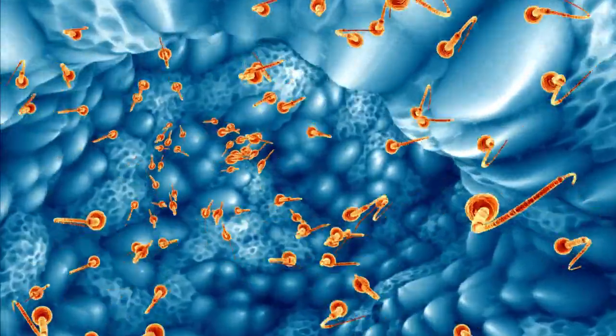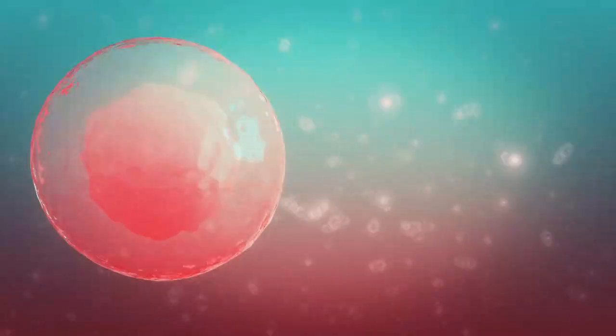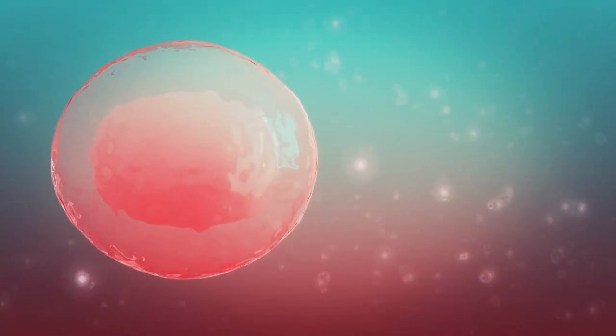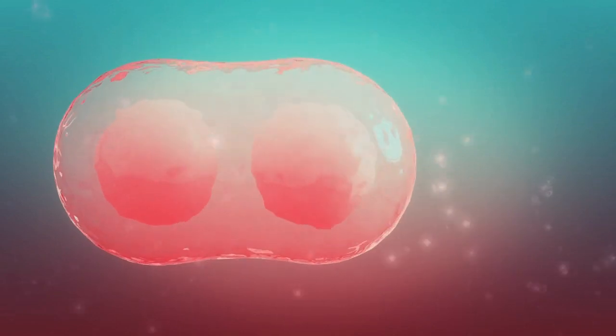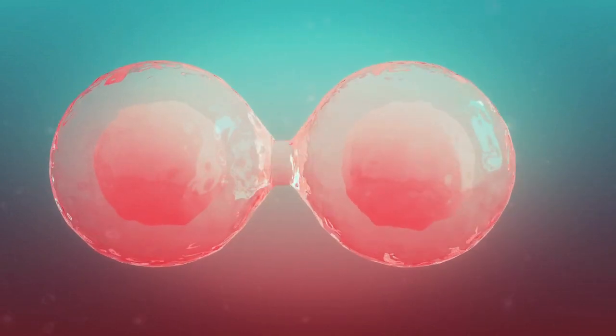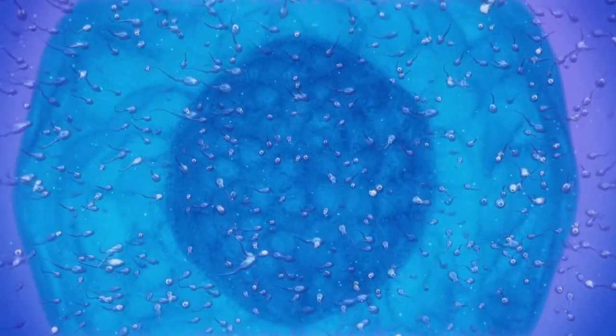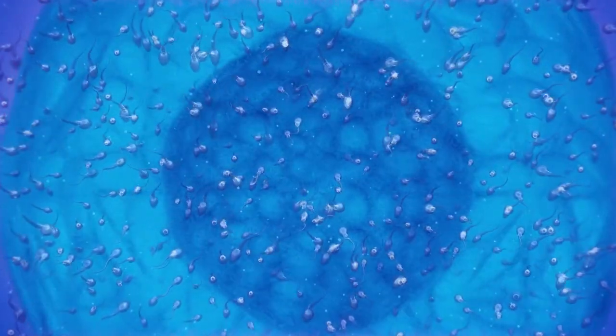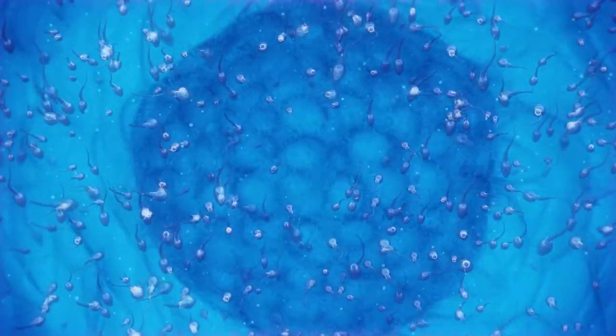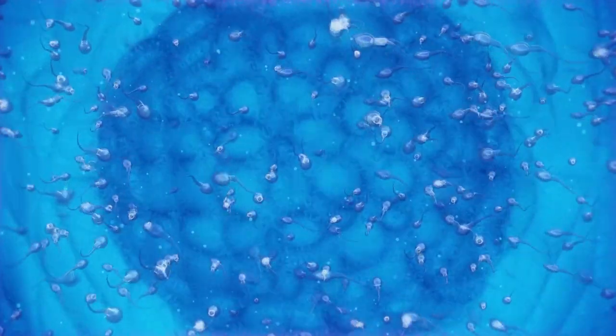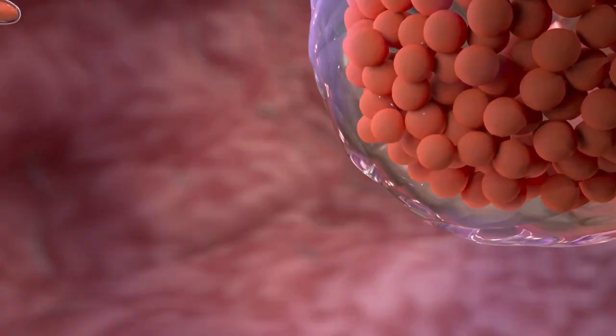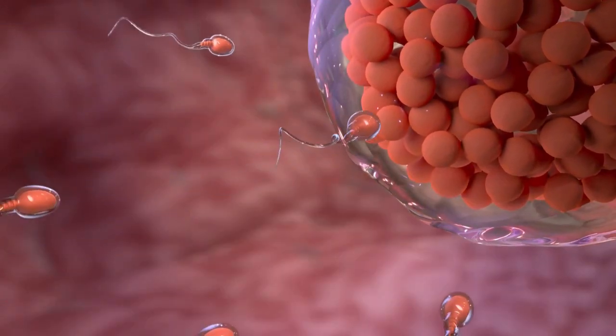The final quest. Within the fallopian tube, tiny cilia propel the egg toward the uterus. The remaining sperm must swim against this motion to reach the egg. Some get trapped and perish, while others become hyperactive due to chemical changes in the reproductive tract, propelling them even harder toward their destination.